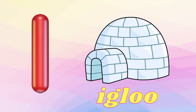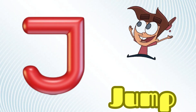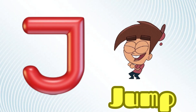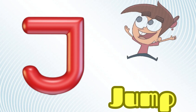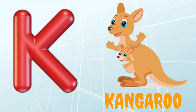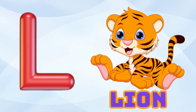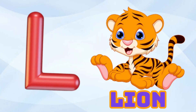I is for Igloo, I-I-Igloo. J is for Jump, J-J-Jump. K is for Kangaroo, K-K-Kangaroo. L is for Lion, L-L-Lion.